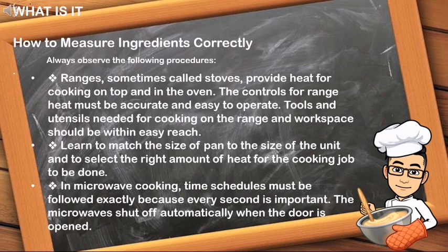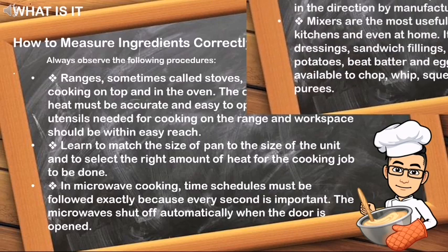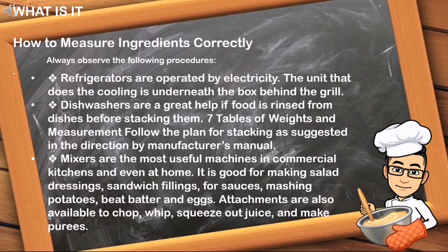The controls for range heat must be accurate and easy to operate. Tools and utensils needed for cooking on the range and workspace should be within easy reach. Learn to match the size of the pan to the size of the unit and select the right amount of heat for the cooking job. In microwave cooking, time schedules must be followed exactly because every second is important; the microwaves shut off automatically when the door is opened. Refrigerators are operated by electricity; the cooling unit is underneath the box behind the grill.